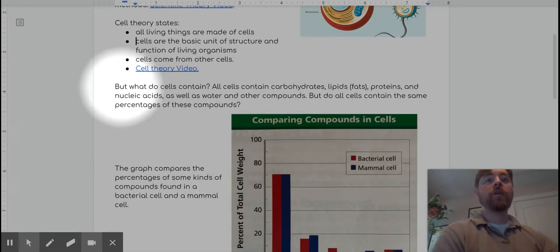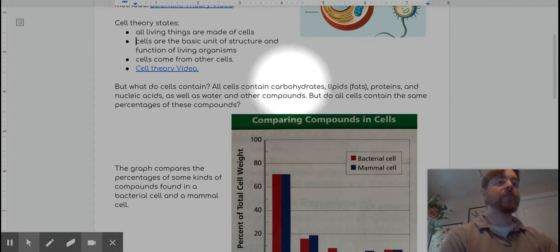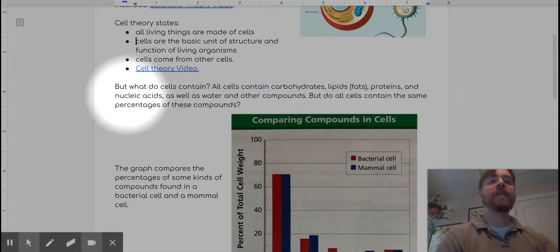So moving on, but what do cells contain? All cells contain carbohydrates, lipids, proteins, and nucleic acids, as well as water and other compounds. All of these things, carbohydrates, lipids, proteins, nucleic acid, and water, those are all molecules made up of atoms and they are part of cells. But do all cells contain the same percentages of these compounds?